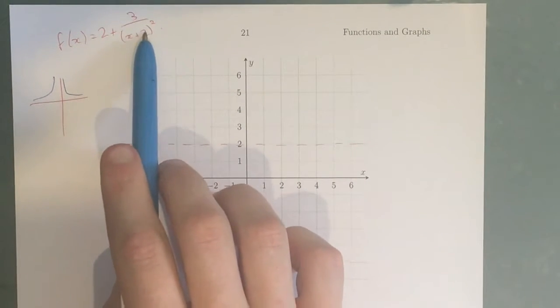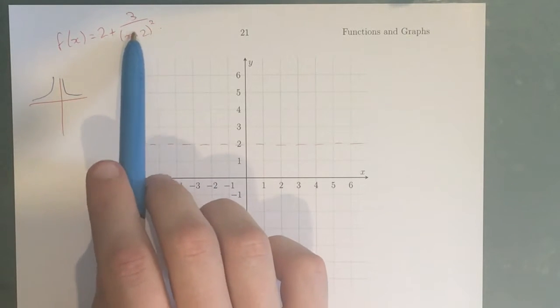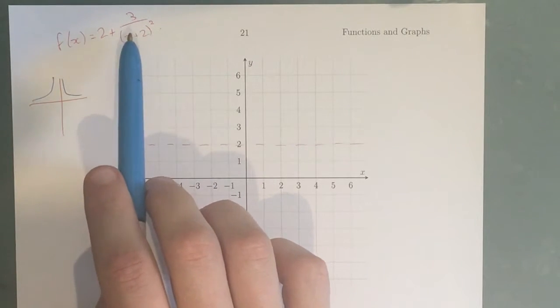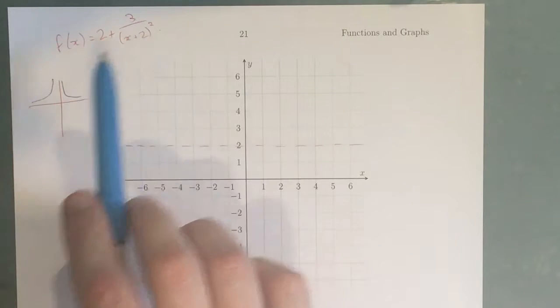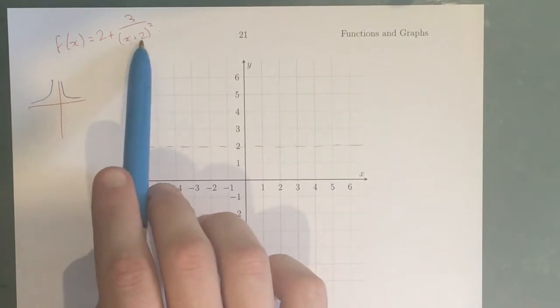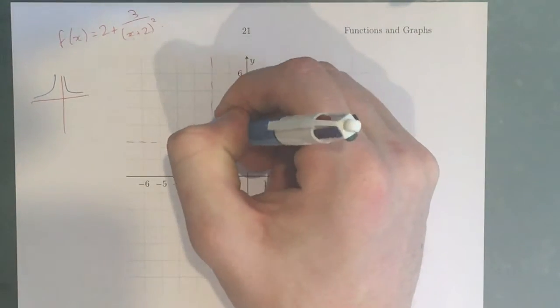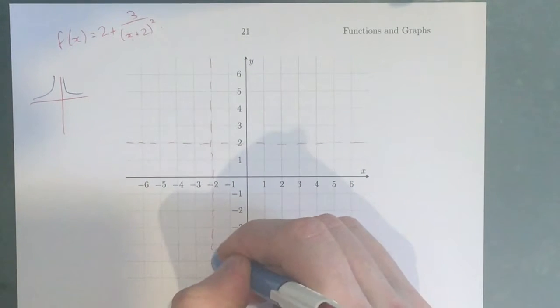This number here in the bracket represents our vertical asymptote. So whatever number x has to equal to make this bottom part equal 0, that's where your asymptote occurs. So if x was negative 2, this bottom part would be 0, which means that our asymptote occurs at x equals negative 2, which runs down here.